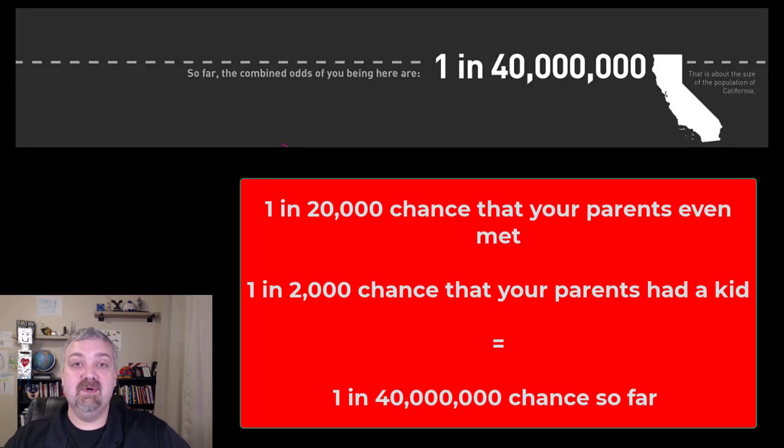So now we've got one in 20,000 chance and a one in 2,000 chance. But here's where we start to see huge numbers. When you multiply those, you see that there's a one in 40 million chance that any man and woman will have a child together. So it's already a massive number.